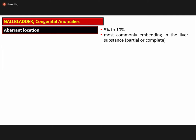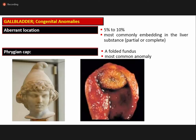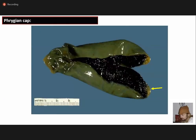Another congenital anomaly is aberrant location of the gallbladder, present in 5 to 10 percent of the population; in most cases the gallbladder is embedded within the liver either partially or completely. A more common entity is the phrygian cap, named after the Turkish cap worn around 1000 AD, in which the gallbladder fundus is folded. A picture shows a normal gallbladder with velvety dark green mucosa and thin wall; the golden arrow points to the bulbous projection known as the phrygian cap.